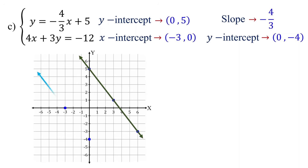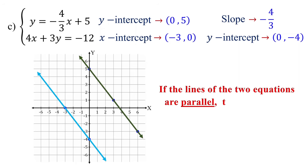Then, connect these two points with a straight line. Notice that the two lines do not intersect — they are parallel lines. If the lines of the two equations are parallel, then the system has no solution.